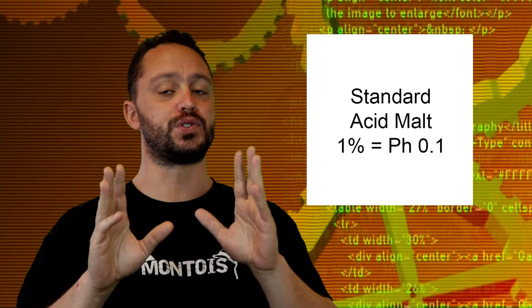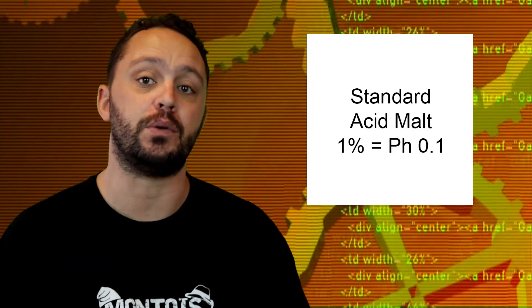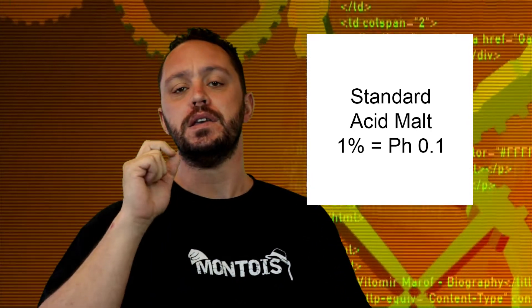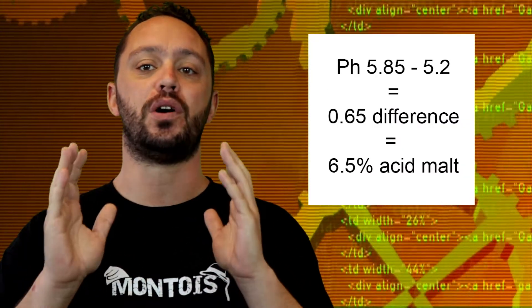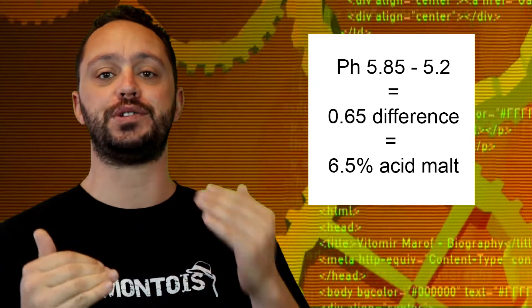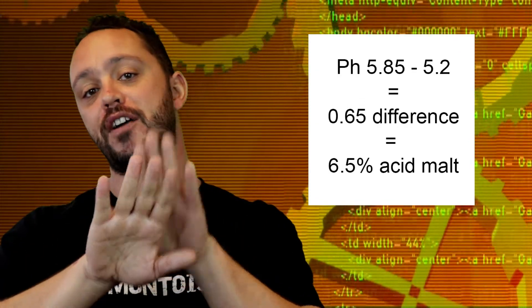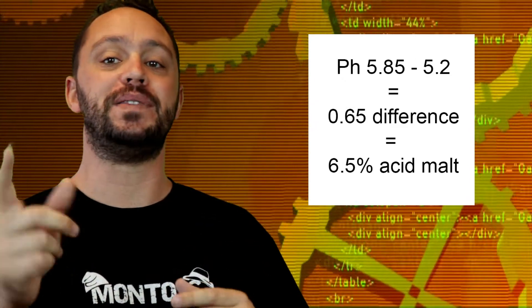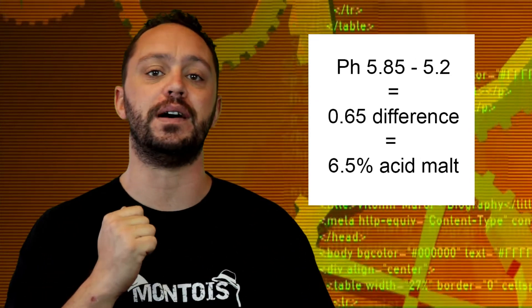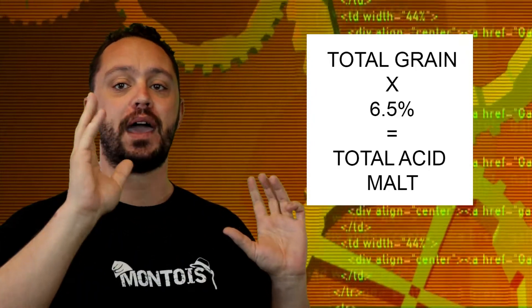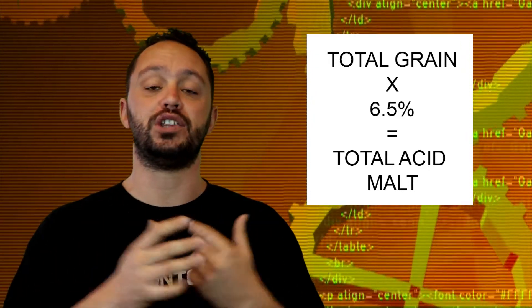Castle Malting's is a lot stronger, so you have to use less of it. The question revolves around a predicted mash pH of 5.85 — how much acidulated malt do you require to drop it to the correct range of 5.2? That's pretty straightforward. When you subtract 5.2 from 5.85, you get 0.65, and that translates directly to 6.5% of acidulated malt in your grist. So take your total kilograms, multiply by 6.5%, and that is the amount you're going to use to get your mash in the right pH range.